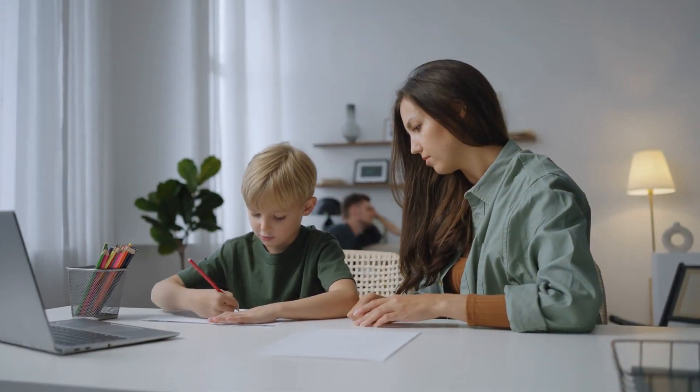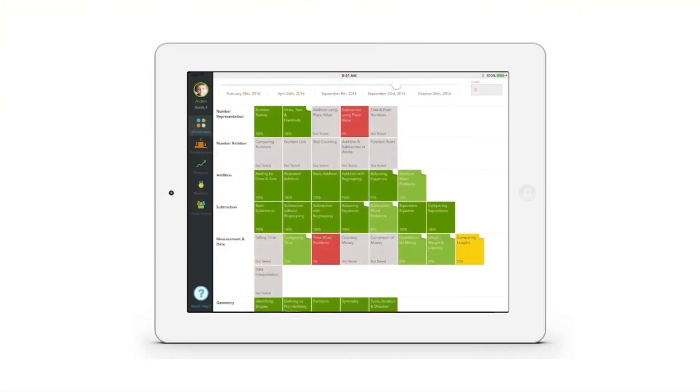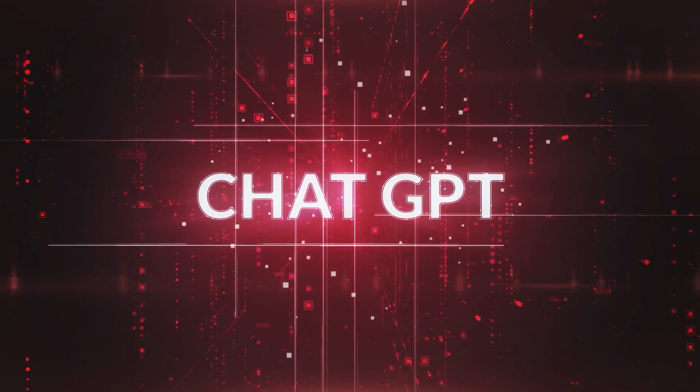For instance, Thinkster Math maps exactly how a child solves problems. If a student consistently adds fractions incorrectly, the system spots the pattern and teaches that concept differently. It's smarter, quicker, and more patient than a human tutor.